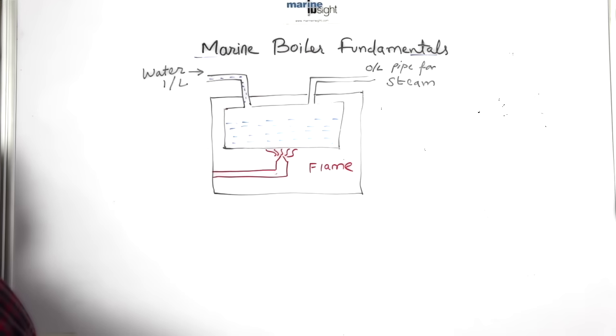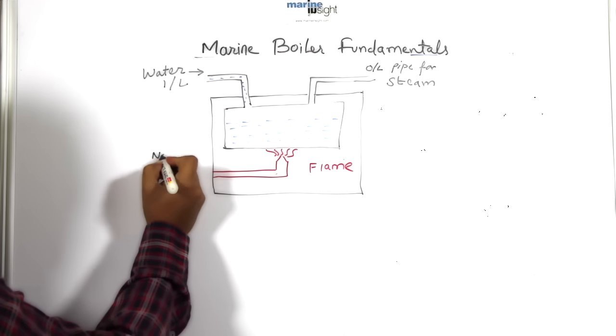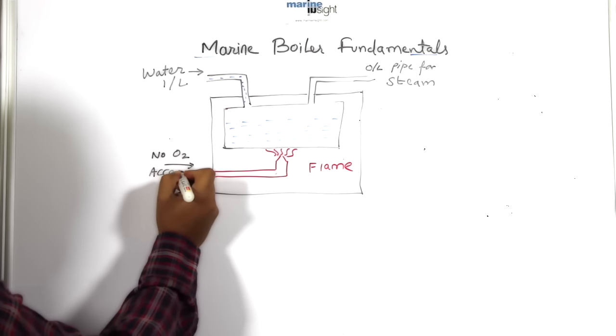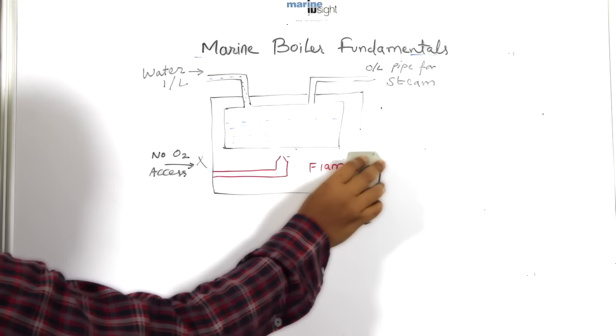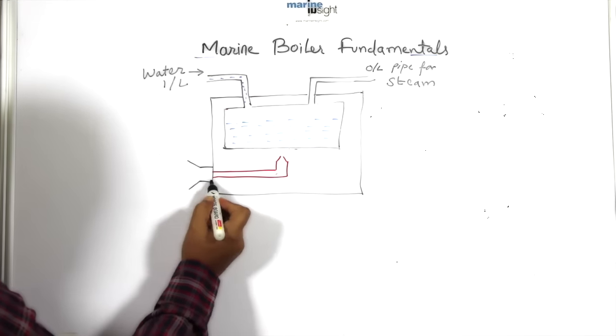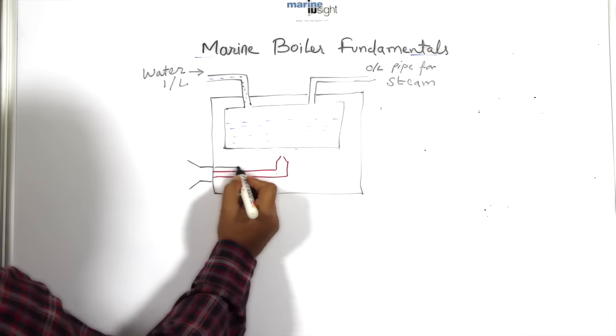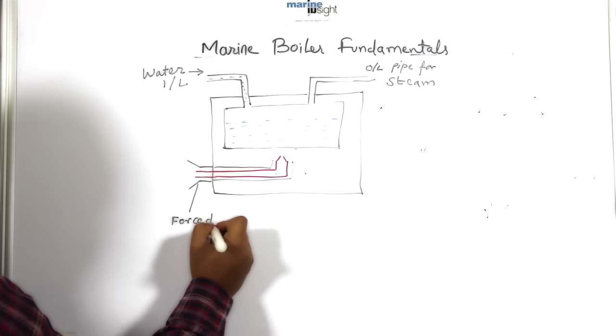But putting a frame leads to another problem. It cuts off the oxygen to the flame. In absence of O2, which is one of the sides of the fire triangle, the flame will get extinguished in no time. To overcome this situation, we will need a forced supply connection such as a forced draft fan which will continuously supply the right amount of air to sustain the flame inside the boiler.